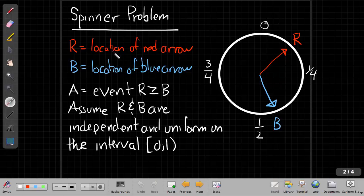So R is the continuous random variable. That's the location of the red arrow. B is the location of the blue arrow. Again, they both go between zero and not quite one. It's an open interval. That's not really an important detail in this problem.